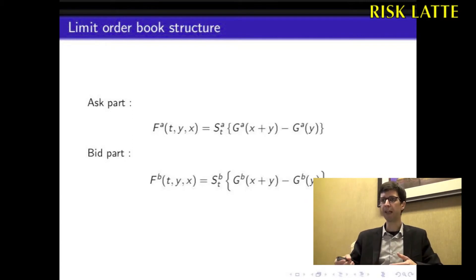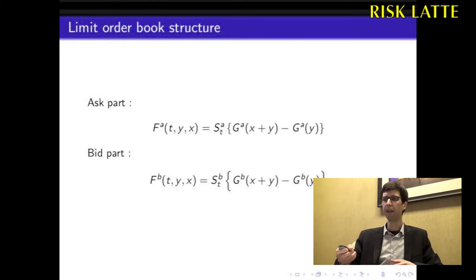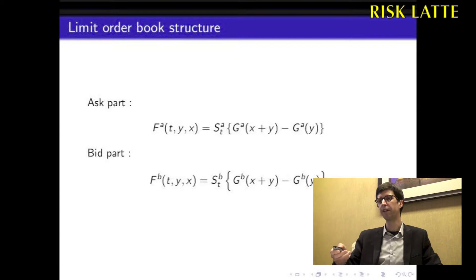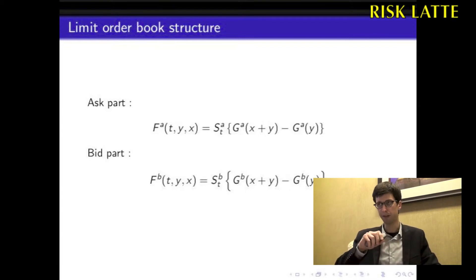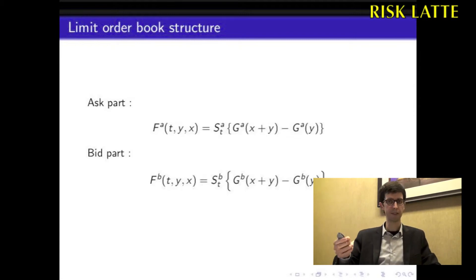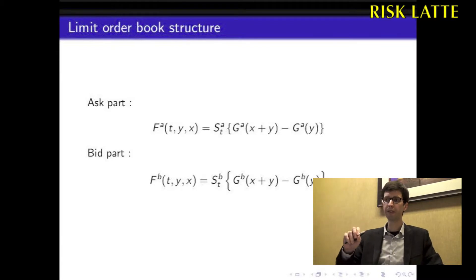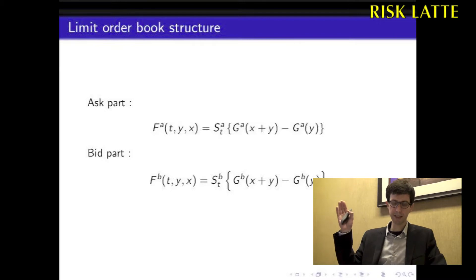The ask part is defined as FA(T, Y, X), where we take our first Brownian motion STA times the difference GA(X + Y) minus GA(Y). The variable X is going to be the size of the transaction, while Y is going to be the level of the impact.